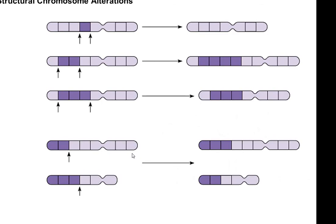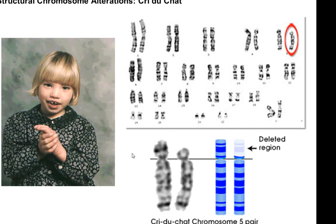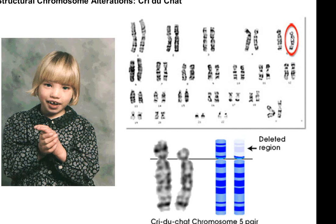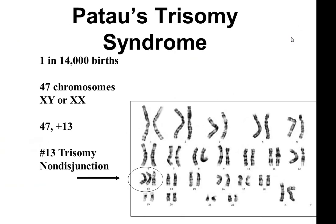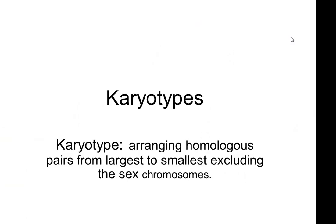Just a reminder — not only do we have non-disjunction, but sometimes a segment of a chromosome is deleted, such as with cri du chat syndrome. So that's pretty much our video. The whole purpose was to look at karyotypes and see how they can be helpful in diagnosing possible genetic disorders.